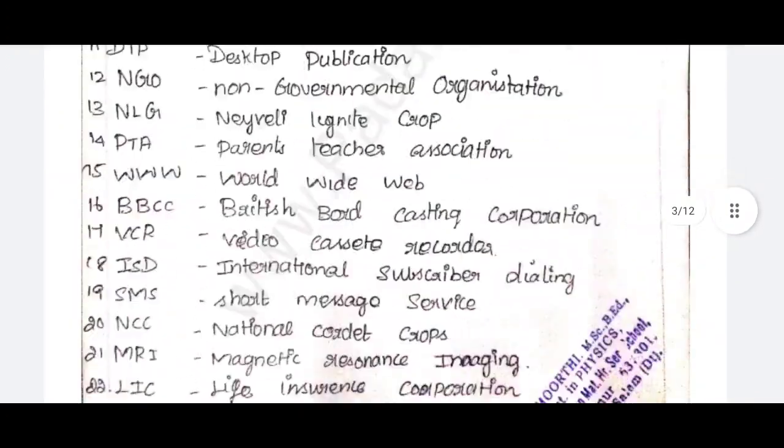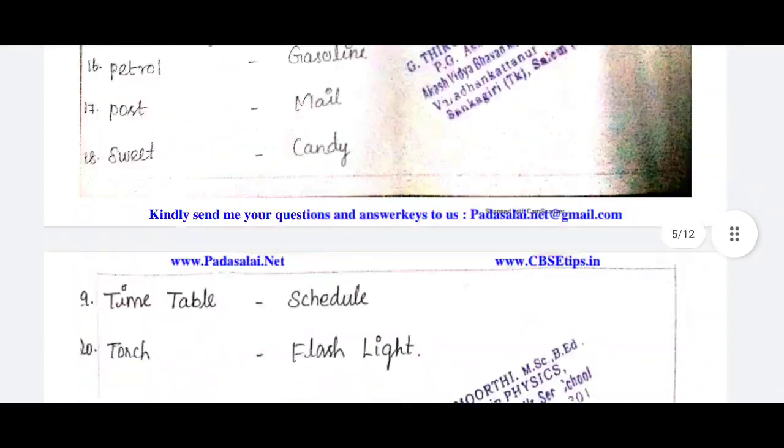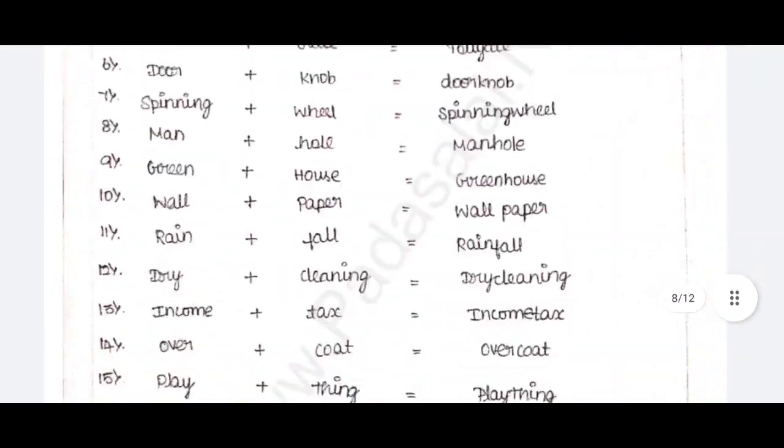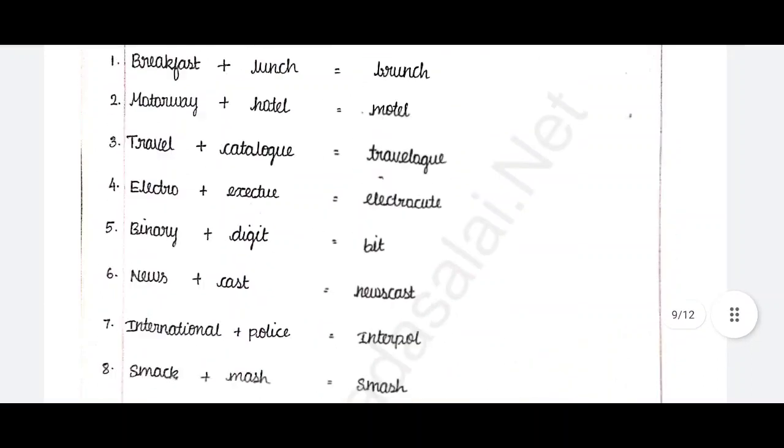In this PDF, we will talk about homophones, suffix, abbreviations, American British English, clipped words, compound words, and blending words.